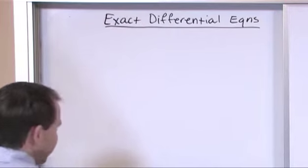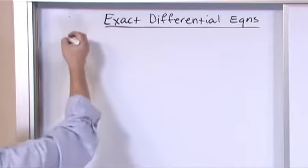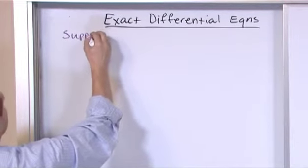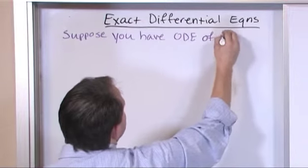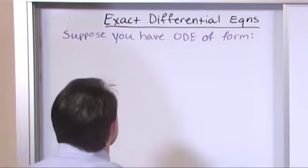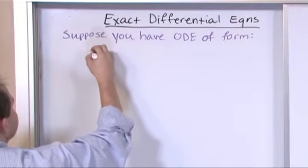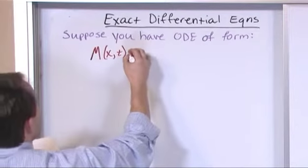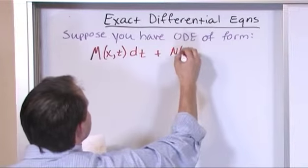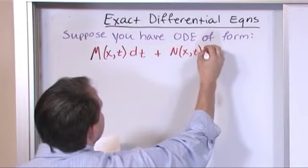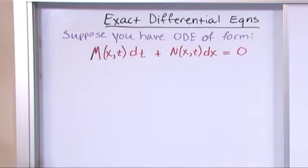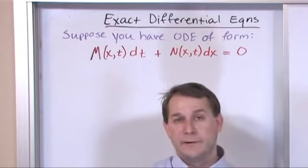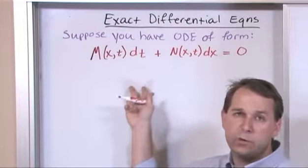Just like everything else, you have to start with knowing what the form is. So suppose you have an ordinary differential equation, ODE, of the form: M is a function of x and t times dt plus N is a function of x and t times dx, and that's equal to zero. This is the form that your differential equation must be in in order to even try to apply this type of solution method. In other words, whether or not you can get the answer is going to depend on a lot of things, but you can't even start unless the actual equation fits this form.